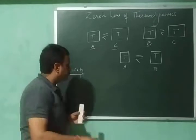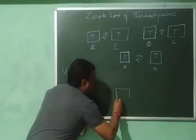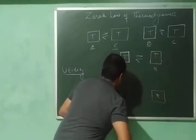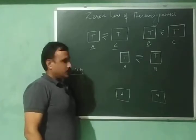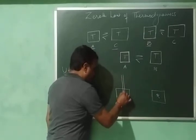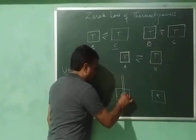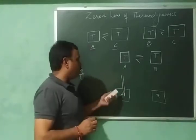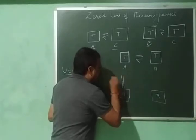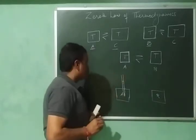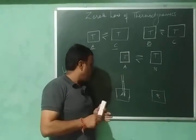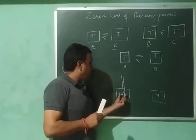Here I have body A and B, and I want to compare their temperatures. I will insert the thermometer into body A, and you will find that the level of mercury will start rising. After some time, the mercury stops rising, which means thermal equilibrium has been attained between body A and the thermometer.